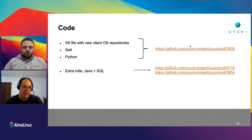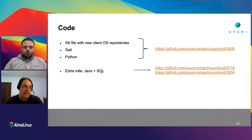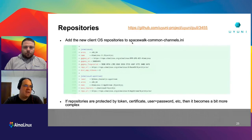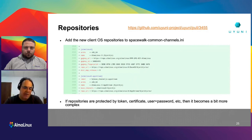What code do you need to touch? This is the easy part — the minimum you need to do. There's some Python enablement, some Salt enablement, and then an INI file which lists the repositories of the new client OS. If you want to add niceties in the web UI, you can go and implement some Java and SQL code — and this is actually like 75% of the work. You can keep it minimal and it's fully functional, but if you want all the beautiful things in the web UI, do the Java and SQL part. For repositories, we just need to add them to the spacewalk common channels file with the GPG key. Mostly if repositories are protected by a token, certificate, or password things get a bit hairy, but this was not the case with AlmaLinux — so it was really easy.